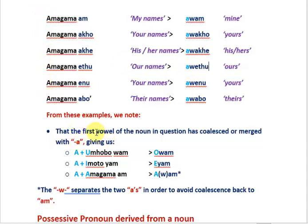So now let's discuss those vowels. What has happened is that the first vowel of the noun in question — u, e, or a — has merged with 'a', giving us o, e, and a. We cannot have 'aa', so we would go back to that particular form of the word, and therefore the two a's have to be separated by means of a 'w'.